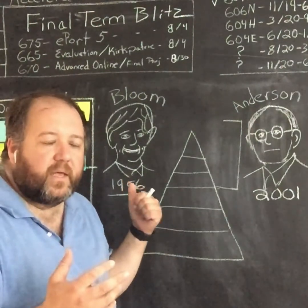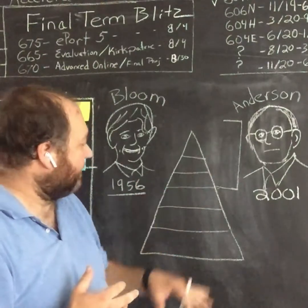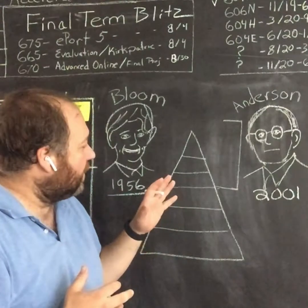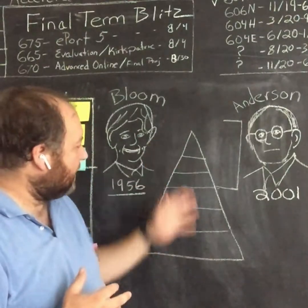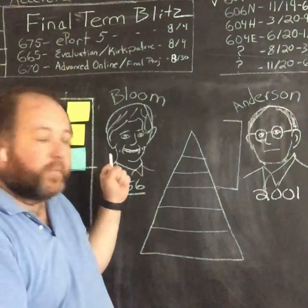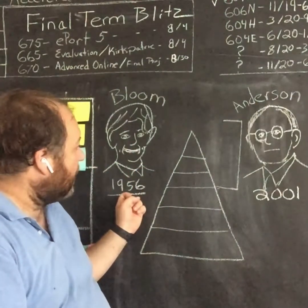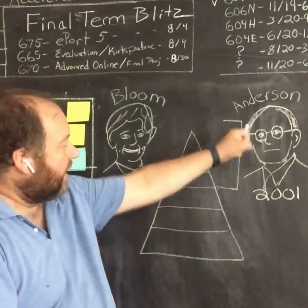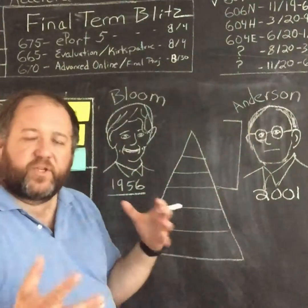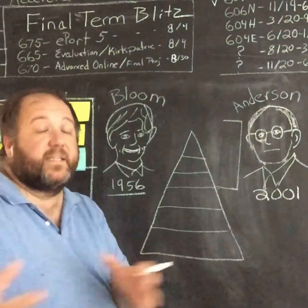So in the cognitive domain there are six levels, and the whole concept was pretty much outlined by Bloom and his team in 1956. But in 2001, Anderson and his team ended up doing a revision, so that's why you'll hear about Bloom's revised taxonomy.